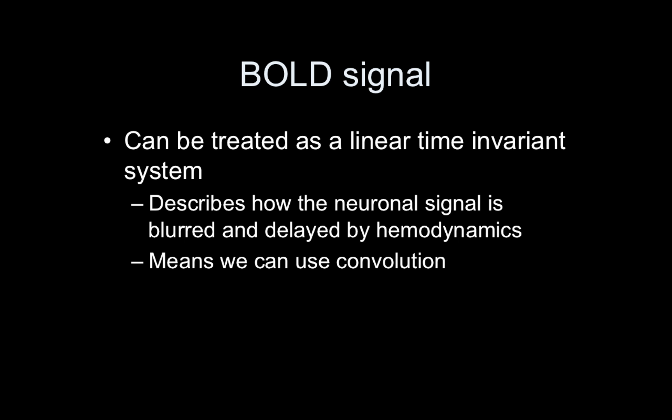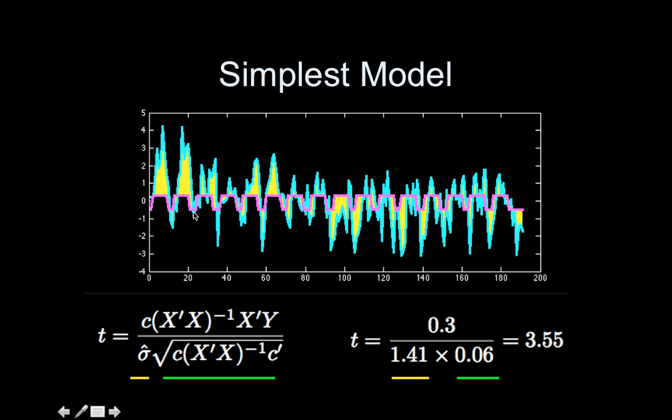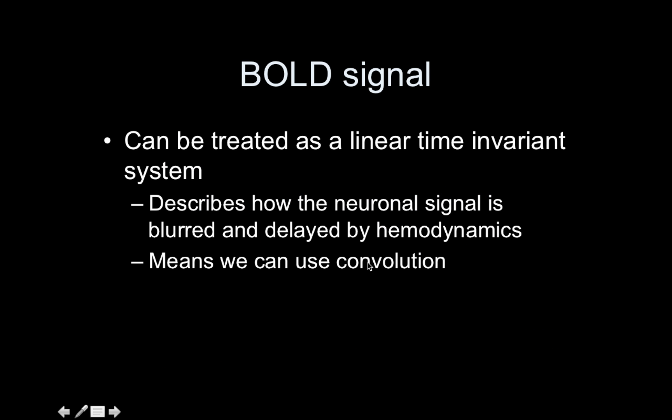So let's talk about the BOLD signal a little bit more. We can treat the BOLD signal as a linear time invariant system. So basically it describes how the neuronal signal, the thing that we're actually interested in, isn't what we're measuring. We're measuring the neuronal signal after it's been filtered through the blood flow response. The thing we're measuring is actually in the blood, it's the oxygen concentration. We use this assumption then to help us get from the thing we wanted to what we're actually measuring. And under this assumption, we can use an operation called convolution to help us make that jump from the neuronal signal, which will look like our boxcar back here, or this is at least what we expect the neuron to do, be on and off, on and off. And we can apply a convolution to get the expected BOLD signal.